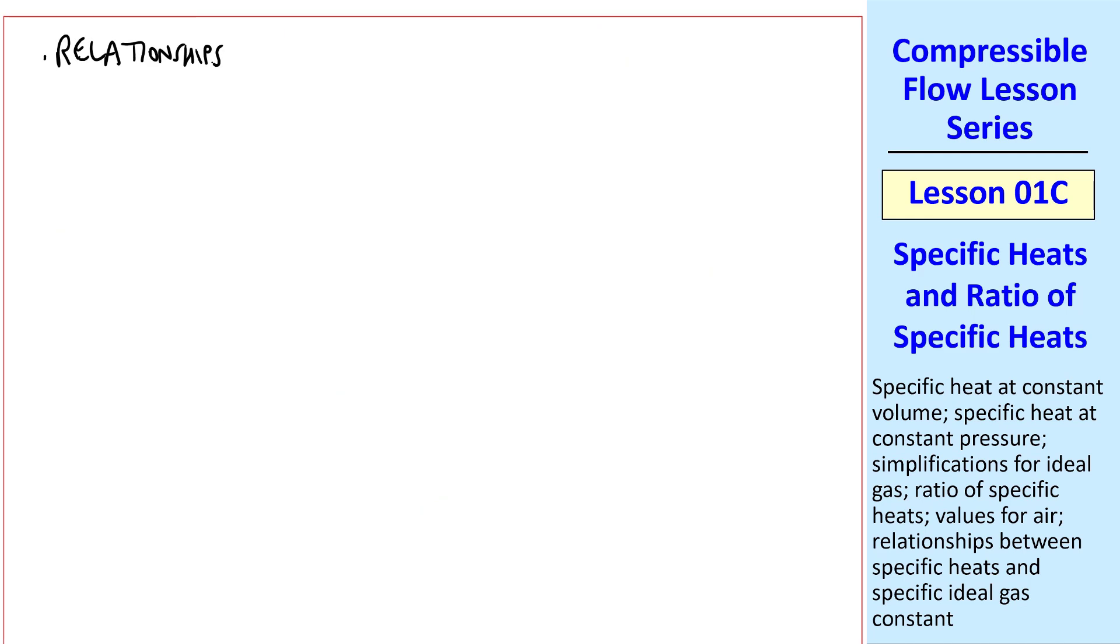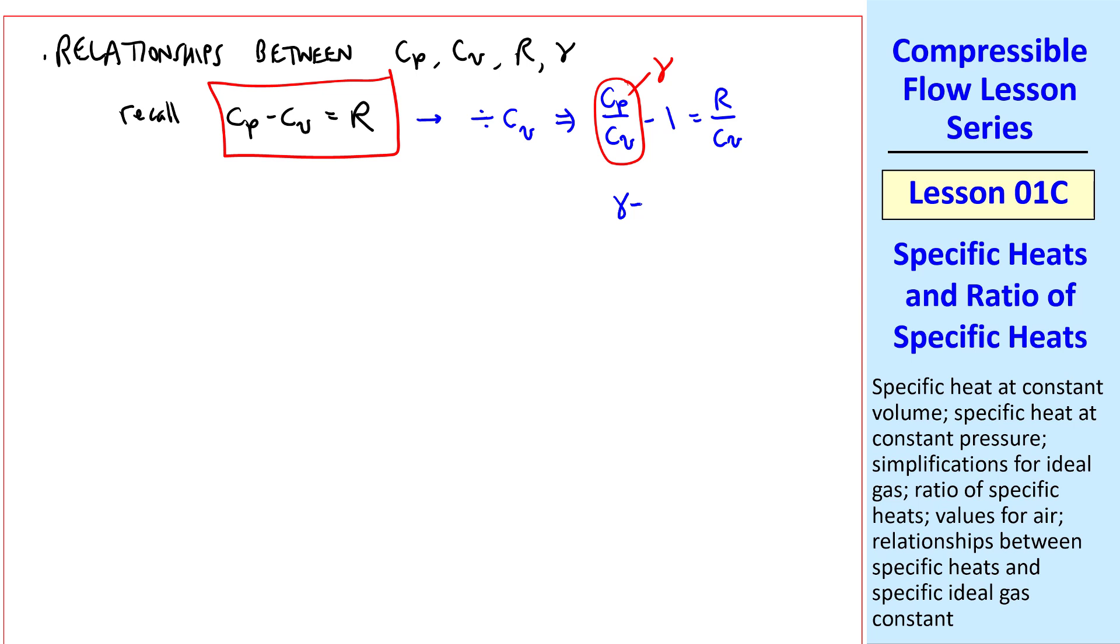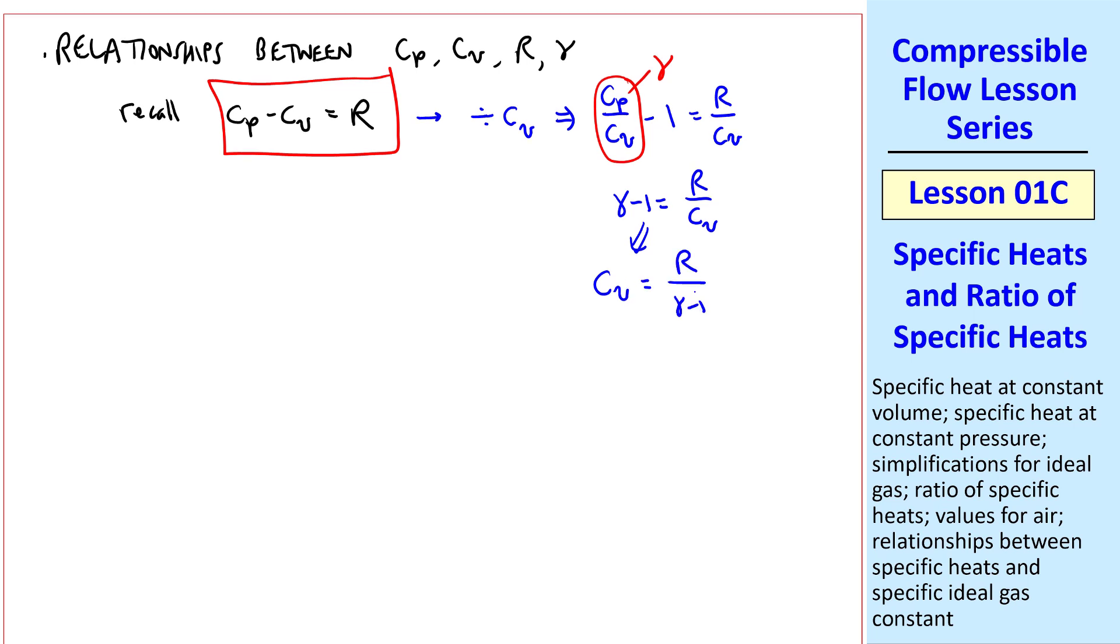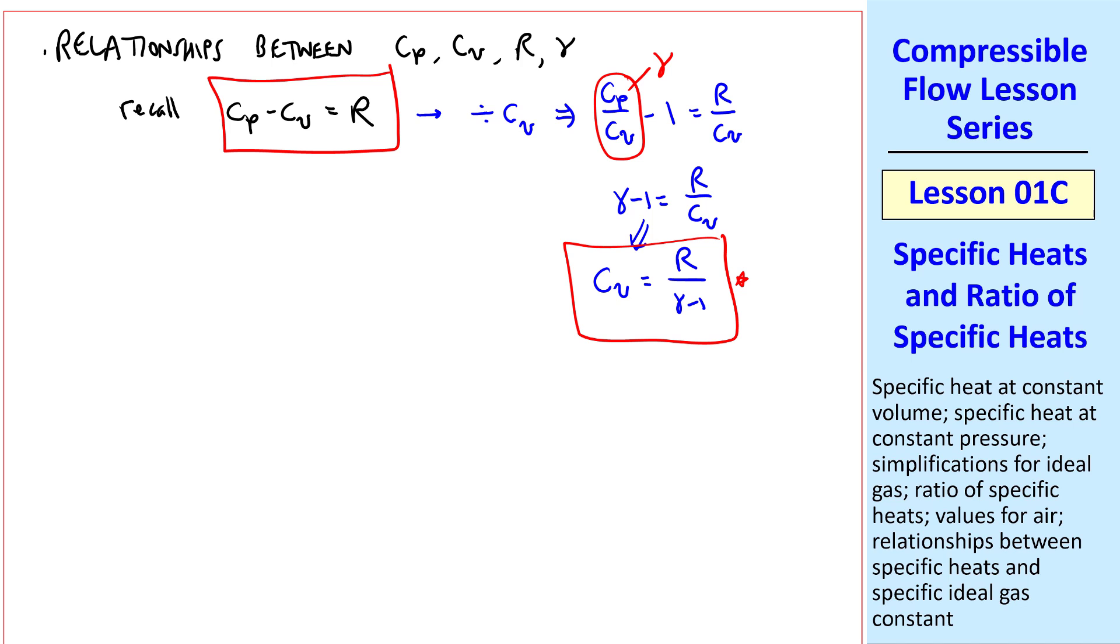Now let's look at some relationships between Cp, Cv, R, and gamma. I already showed this equation. We do a little bit of math by dividing all terms by Cv. This gives us Cp over Cv minus Cv over Cv, which is 1, equal R over Cv. Well, we just define this as gamma. And so gamma minus 1 is R over Cv, which we can rewrite as Cv equal R over gamma minus 1.